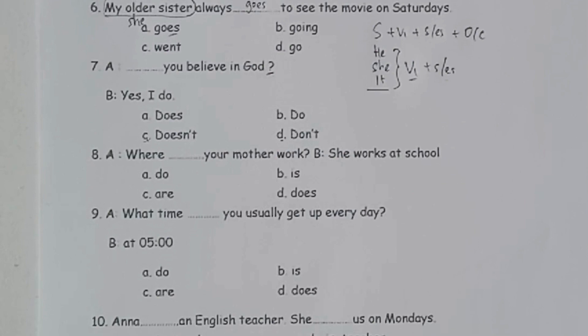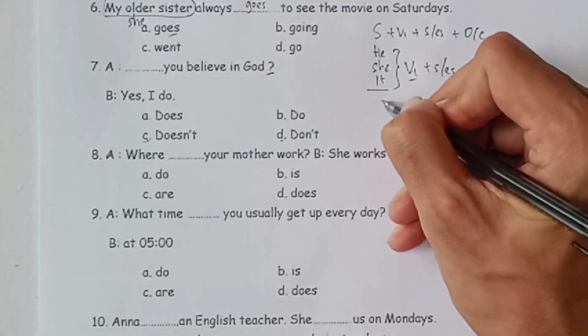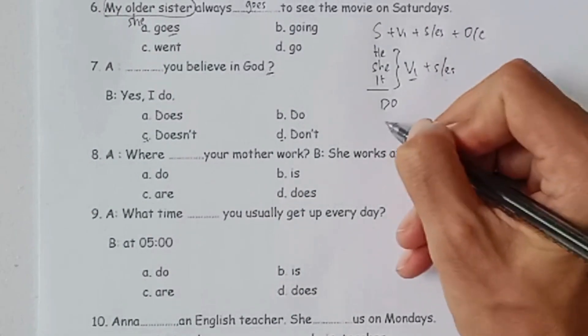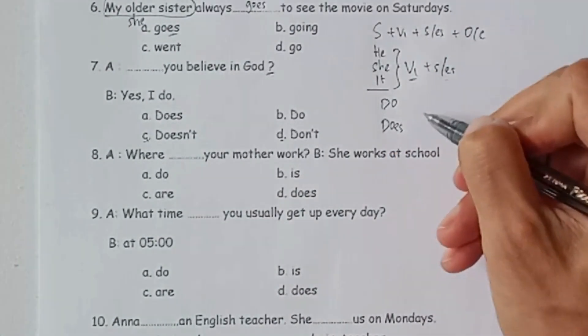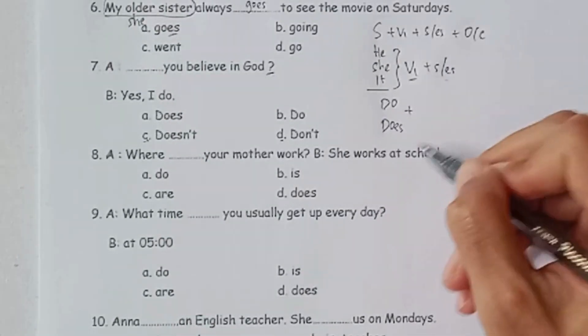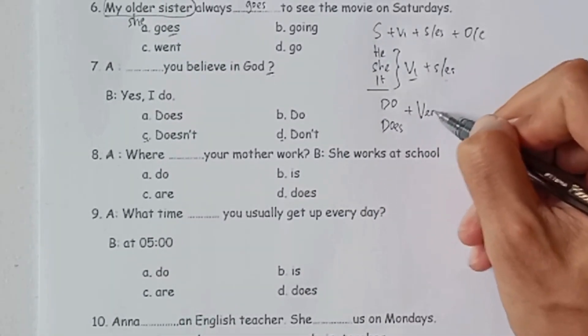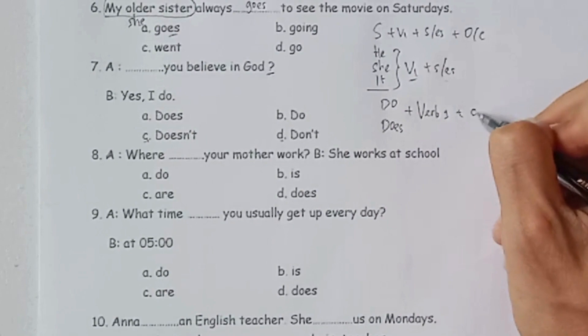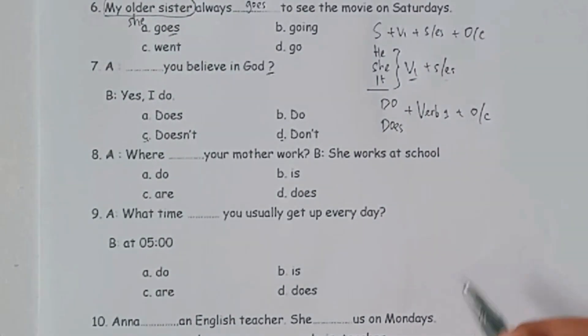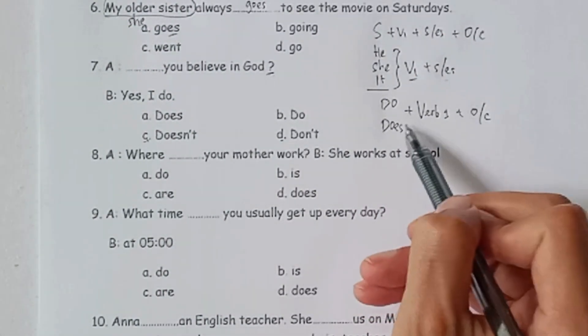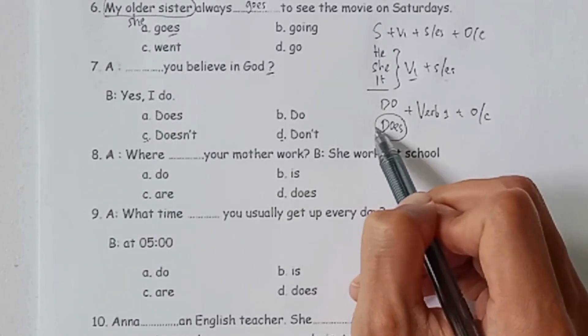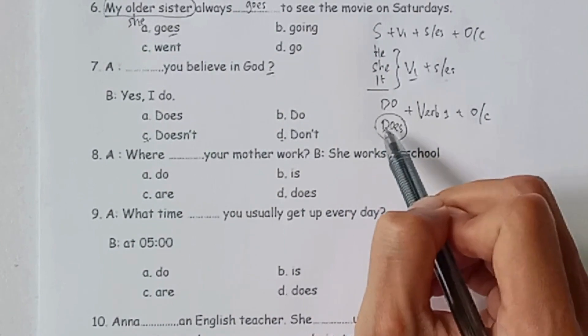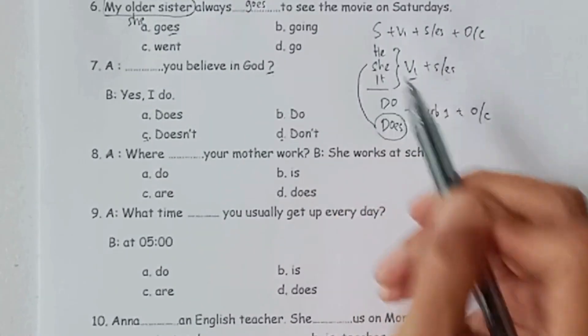Untuk membuat kalimat tanya dalam bahasa Inggris dengan Simple Present Tense, kita bisa mulai dengan kata do atau does. Do ditambahkan atau does ditambahkan, kemudian subject, kemudian verb bentuk pertama, ditambahkan object atau complement. Kapan digunakan do atau does? Kita fokus ke does saja dulu. Does ini ketika subjectnya adalah he, she, atau it.